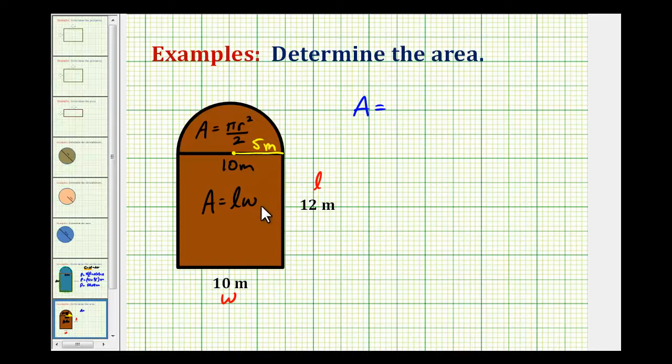So the area will be the area of this rectangle, which will be 12 meters times 10 meters. We'll leave off the units until the end, plus the area of this half circle, which will be pi times the radius squared, which will be 5 meters squared, all divided by 2 because we have half of a circle.